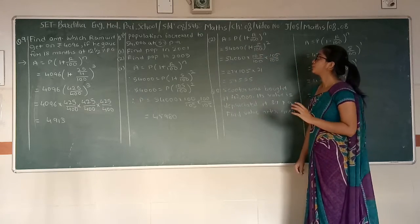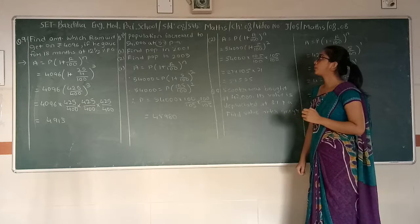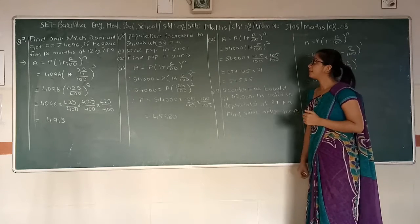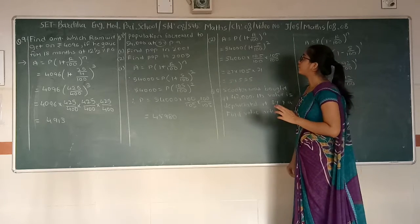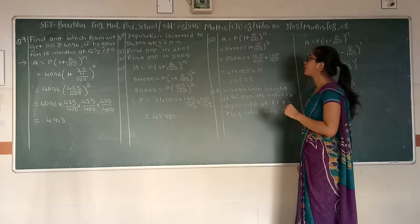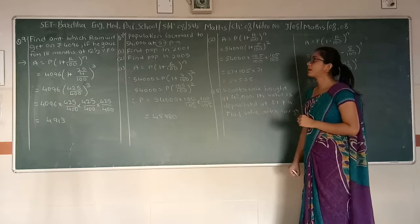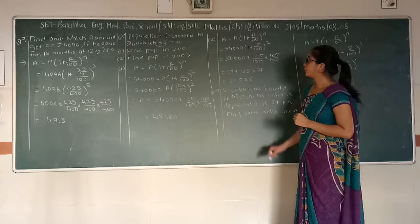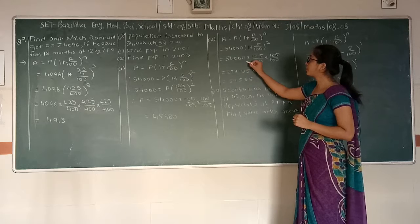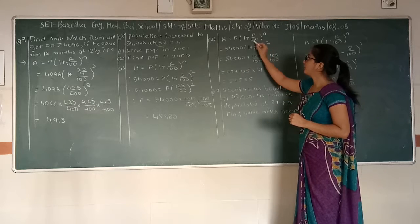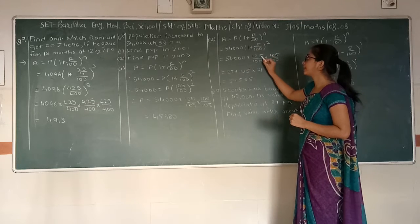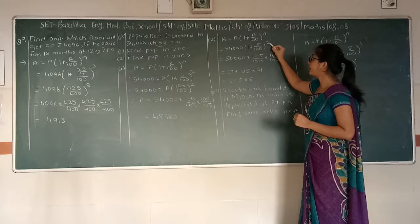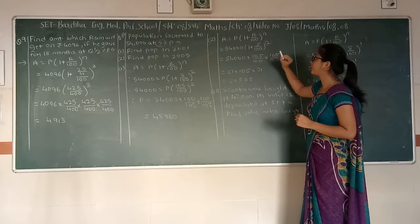For the population in 2005, A is equal to P into bracket 1 plus 5 upon 100 raise to 2, which equals 54,000 into bracket 1 plus 5 upon 100 raise to 2. If we solve this equation we get 105 upon 100, and as the power is 2, we write it 2 times.